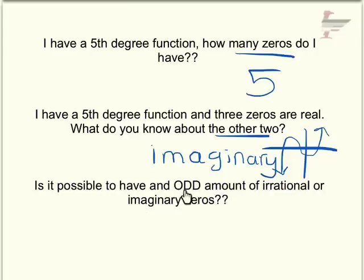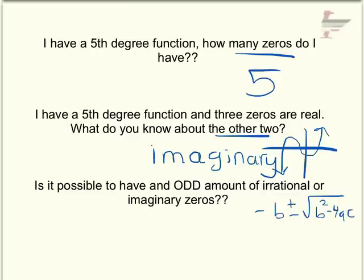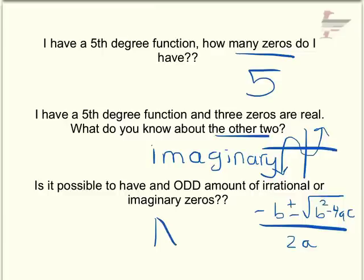Is it possible to have an odd number of imaginary zeros? No — if the function crosses four times, you'd only have one imaginary zero, which is impossible. Think about the quadratic formula: you have the negative b plus or minus the square root of b squared minus 4ac. If the discriminant is negative, you get imaginary solutions, and since there's always a plus or minus, imaginary solutions always come in pairs. So if you have negative 3 plus 2i, you also have negative 3 minus 2i. You can never have an odd number of imaginary zeros.